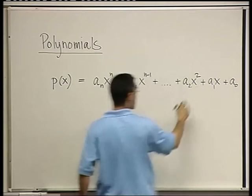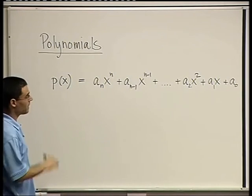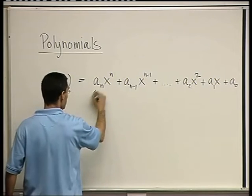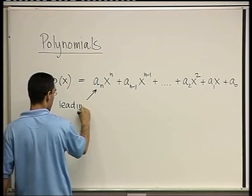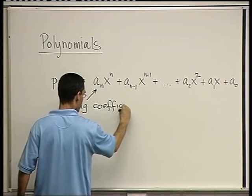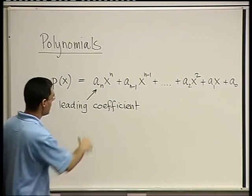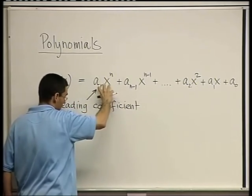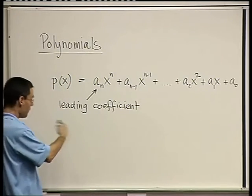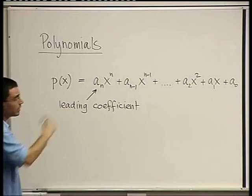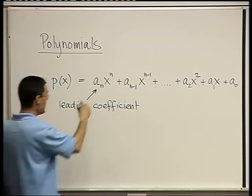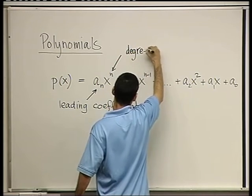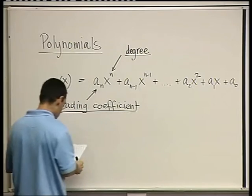So x is the variable here. And we'll write down several examples in a minute. And these a's with indices are called the coefficients. So this is called the leading coefficient. The leading coefficient cannot be 0, because if it's 0, then this term is actually not there, and the polynomial starts here. The leading coefficient is the coefficient of the highest power of x that appears in the polynomial.